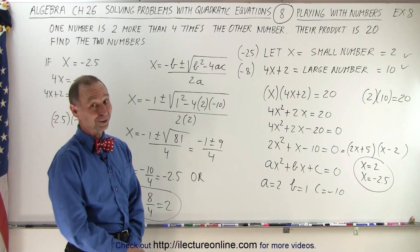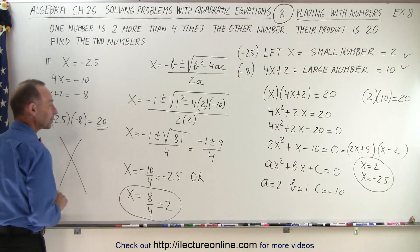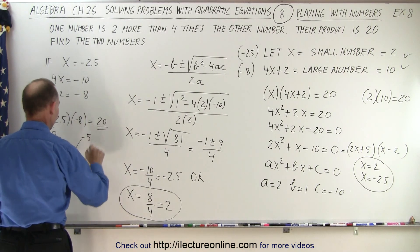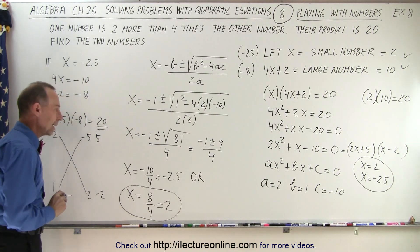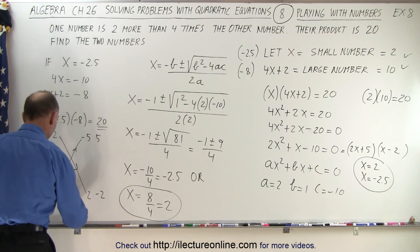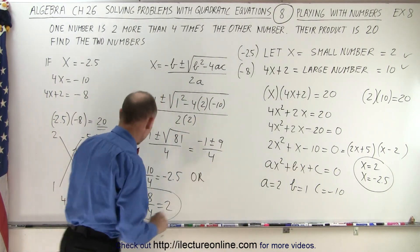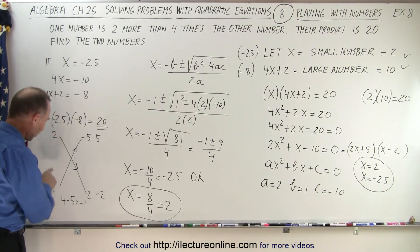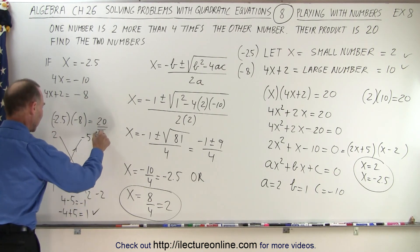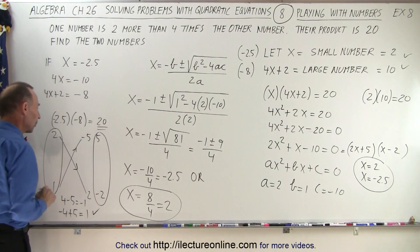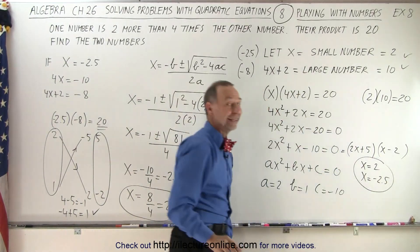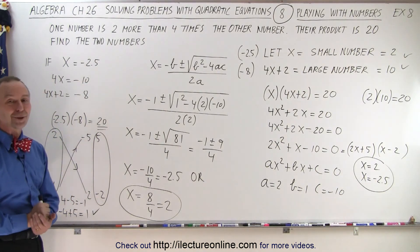Let's also do the FOIL method. We need a 2 and a 1 for the x terms. For −10: try negative 5 and positive 2: 2·2 = 4, and 1·(−5) = −5, giving −1 — that doesn't work. Try negative 2 and positive 5: 2·(−2) = −4, and 1·5 = +5, giving +1 — that works. So (2x + 5)(x − 2) is confirmed, and the FOIL method will never let you down.